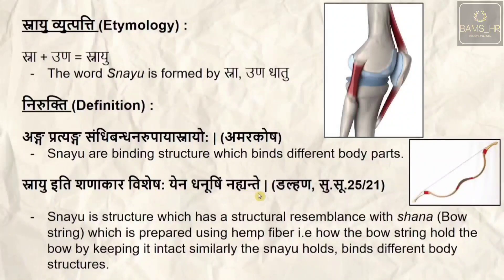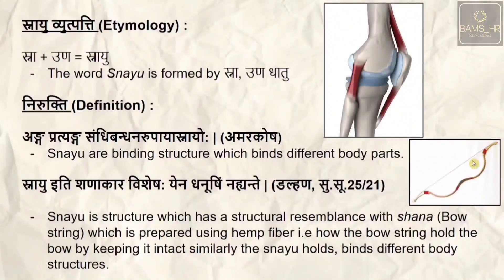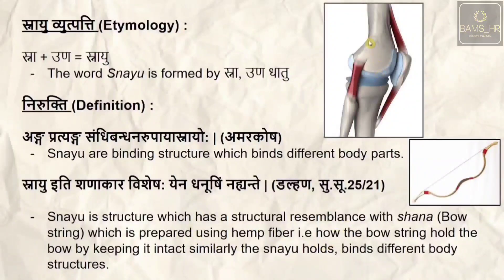Dalhana, commenting on the Shushruta Sutra sloka, states that snayu is a structure that resembles shana — a bow with a string attached to it. Just as the string holds the bow tightly intact in its original state, similarly the snayu holds the body parts.